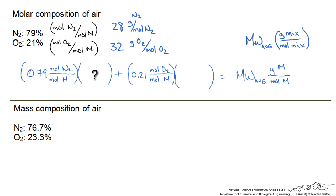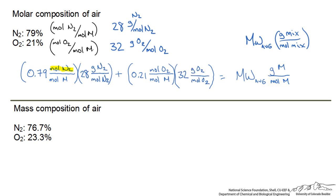The question is what would we multiply the 0.79 value by to cross out the moles of nitrogen, since in the end product we have grams of mixture per moles of mixture. We want to keep the moles of mixture, so if we multiply by the molecular weight we cancel out the moles of nitrogen and the moles of oxygen. Now we have grams of nitrogen per mole of mixture and grams of oxygen per mole of mixture. Since grams of nitrogen plus grams of oxygen equals grams of our mixture, we have the appropriate units. So when given the molar composition and we want the average molecular weight, we multiply the mole percents by the molecular weights of each species and add them together.